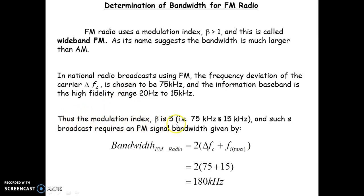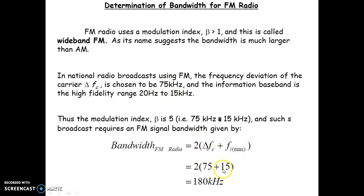The bandwidth is calculated using Carson's rule: bandwidth equals 2 times (delta_FC plus f_i_max), where f_i_max is the maximum frequency of the information signal and delta_FC is the carrier frequency deviation. Substituting: 2 times (75 kilohertz plus 15 kilohertz) equals 2 times 90 kilohertz, giving a bandwidth of 180 kilohertz.